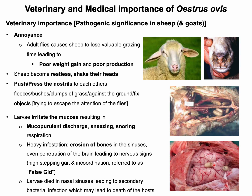Erosion of bones in the sinuses and even penetration of the brain by larvae can lead to nervous signs such as high-stepping gait and incoordination, referred to as 'false gid.' If larvae die in the nasal sinuses or in the brain, secondary bacterial infection may occur, which can lead to death of the affected sheep.